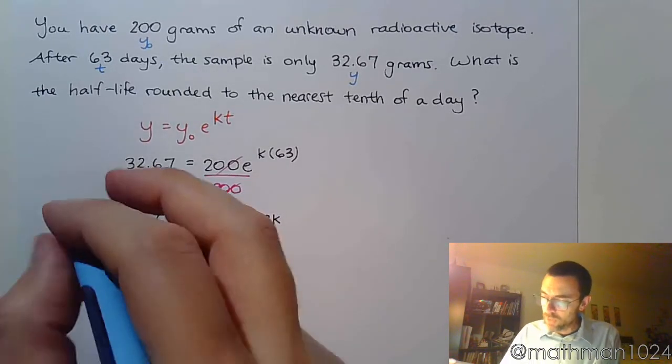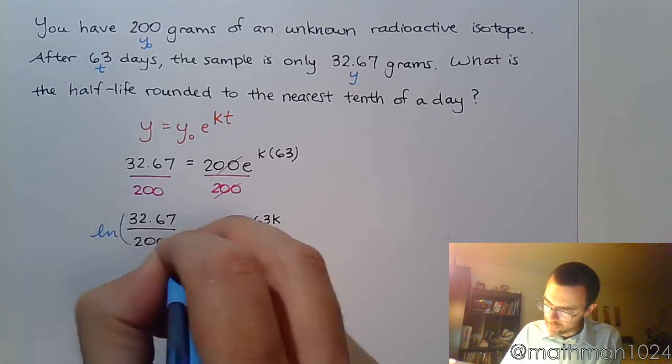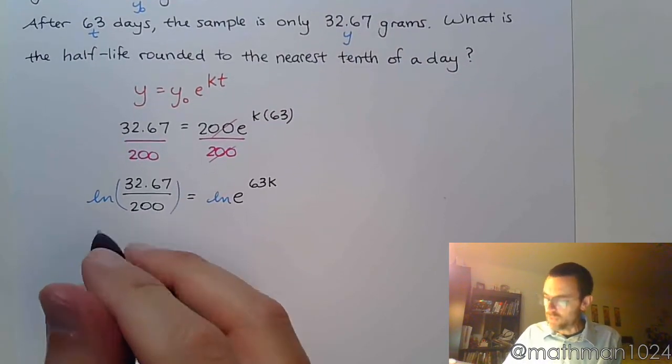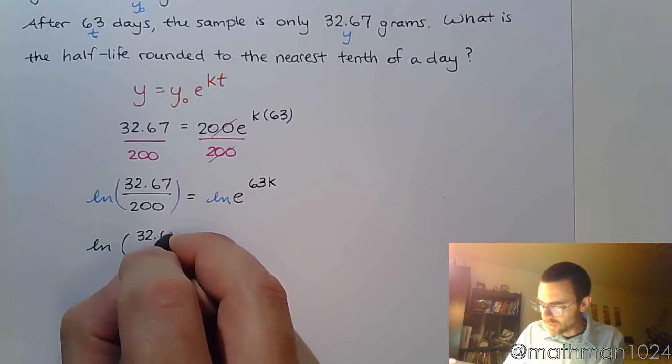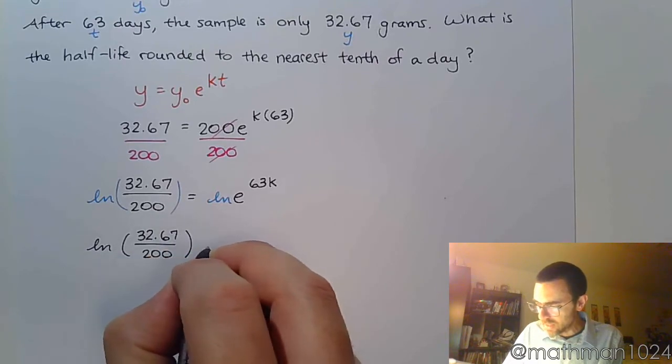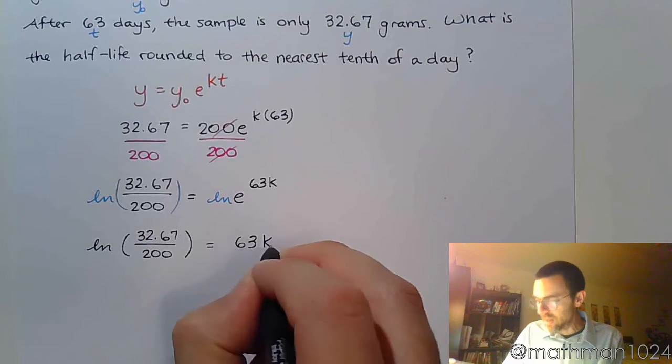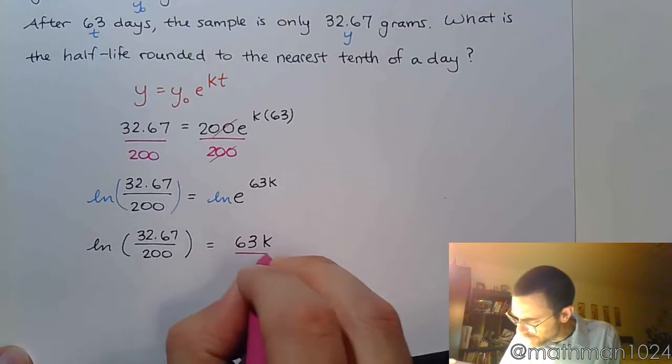And now we take the natural log of both sides. The natural log of 32.67 divided by 200 equals 63K. I'm trying to find the K, and that's really the linchpin in all of this. So we divide both sides by 63.